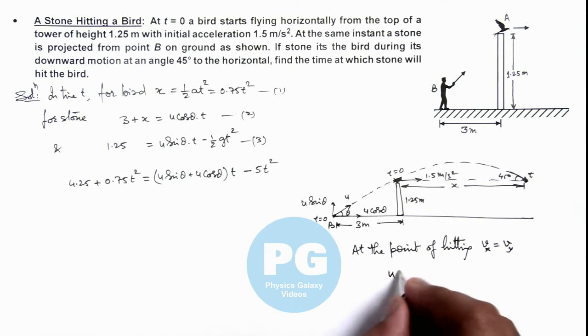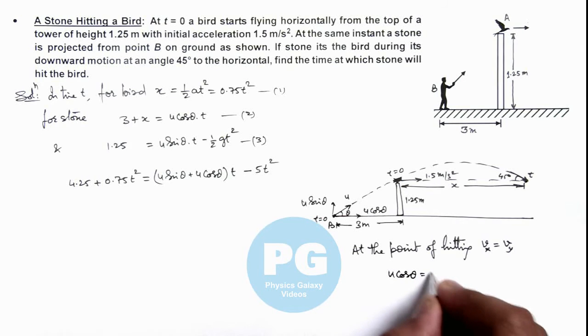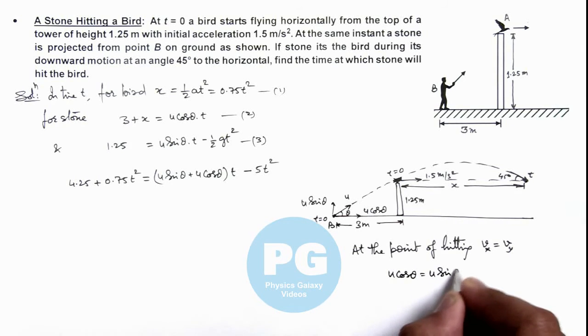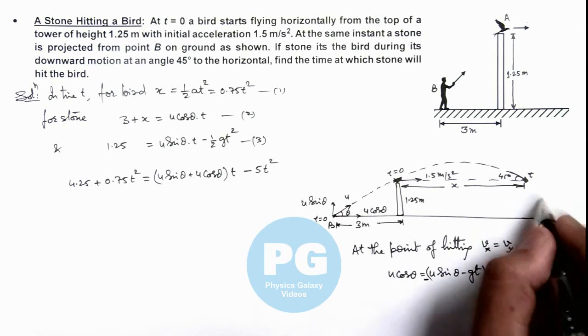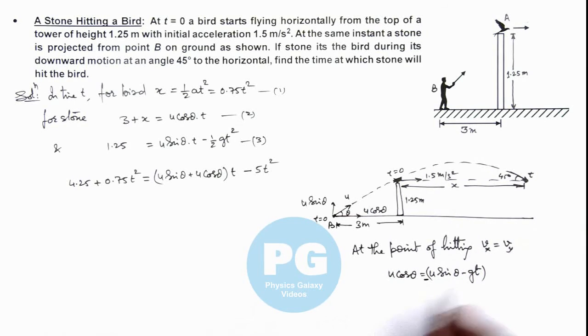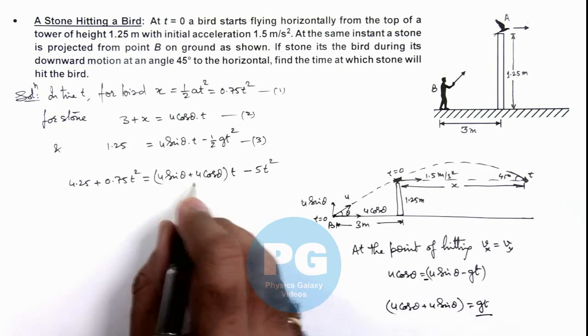In x direction it is u cos theta, and in y direction we can write u sin theta minus g t. The y direction velocity would be negative as it is in downward direction, so this gives us u cos theta plus u sin theta equals g t. If we substitute this value, g t is 10 t, so we can write...